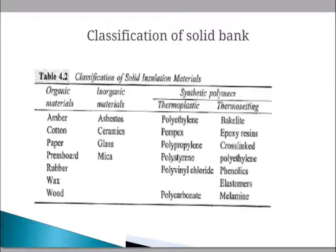Class A insulation is rated at 105°C — same as Class Y but impregnated — and nylons are used. Class E is rated at 120°C and includes polyethylene terephthalate fiber, melanics fiber, cellulose, polyurethanes, and polyvinyl acetate enamels. Class B is rated at 130°C and includes mica, bituminous materials, bakelite, and polyester enamels.